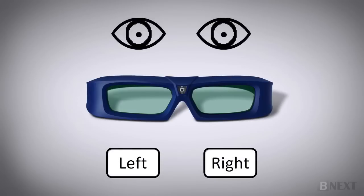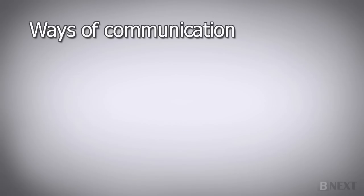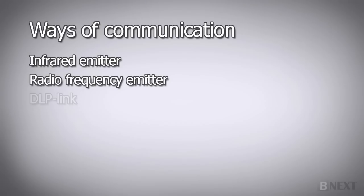For example, when the left lens turns black, only the right eye sees the image that the screen intends for it, or vice versa. There are a few ways communication occurs with active shutter 3D glasses, through an infrared emitter, a radio frequency emitter, or a DLP link that uses a flashing technique instead of an emitter.